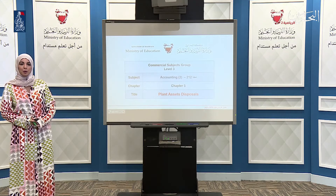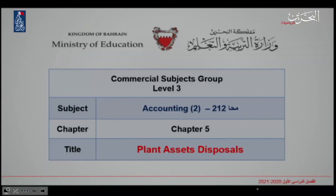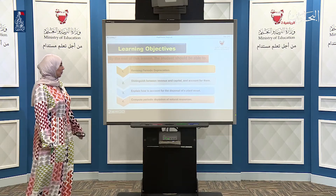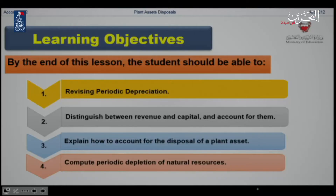Welcome, my dear student, to the Commercial Subject Group, Level 3, with Account 212. Today, our chapter is Chapter 5, about the plant assets disposal. Our learning objectives are: reversing periodic depreciation; distinguishing between revenue and capital and accounting for them; explaining how to account for the disposal of plant assets; and computing periodic depletion of natural resources.